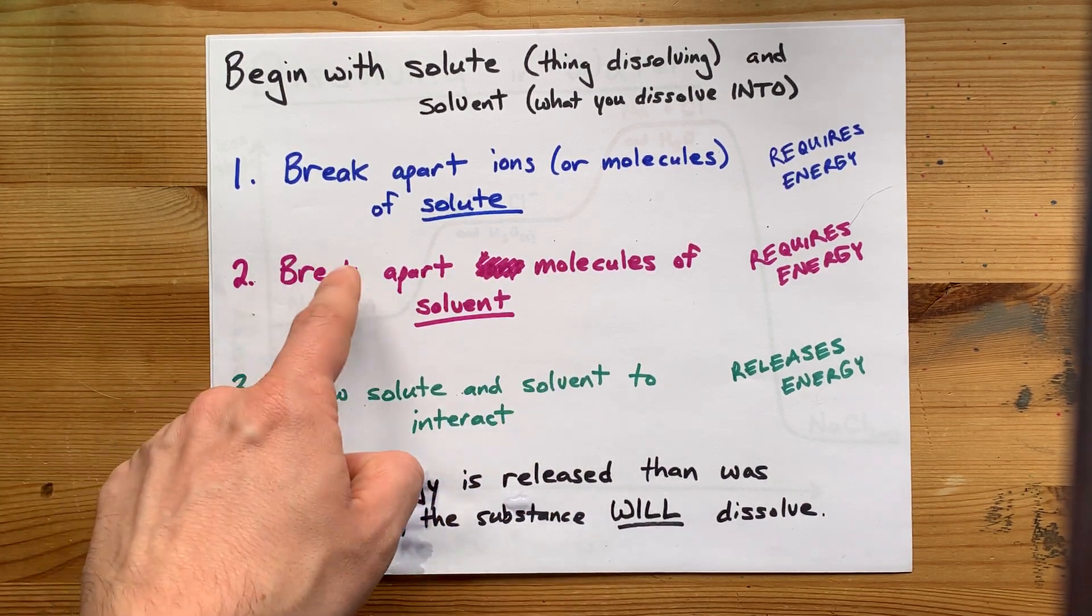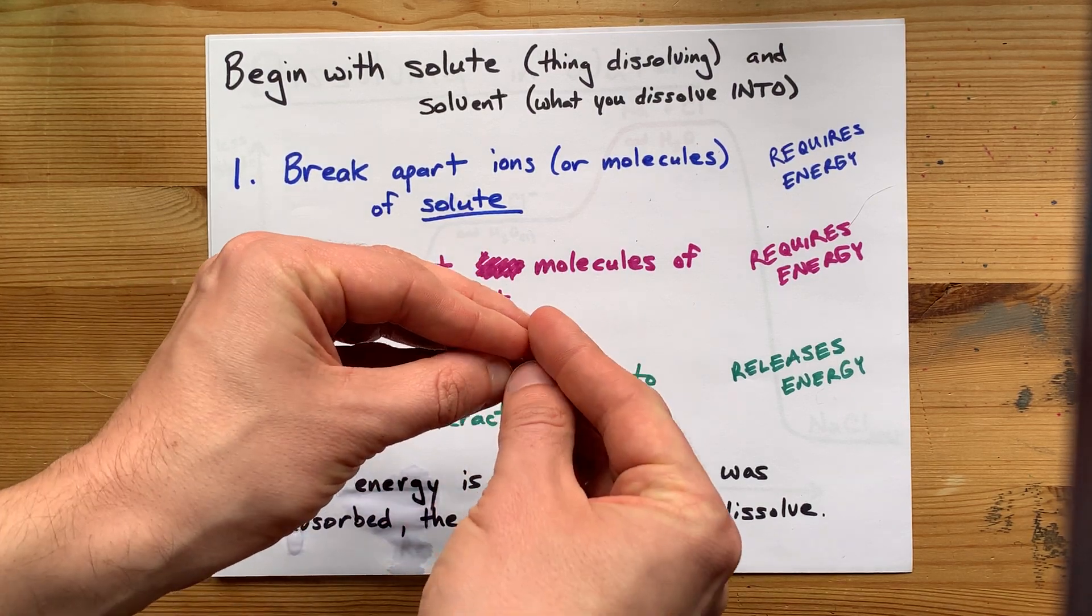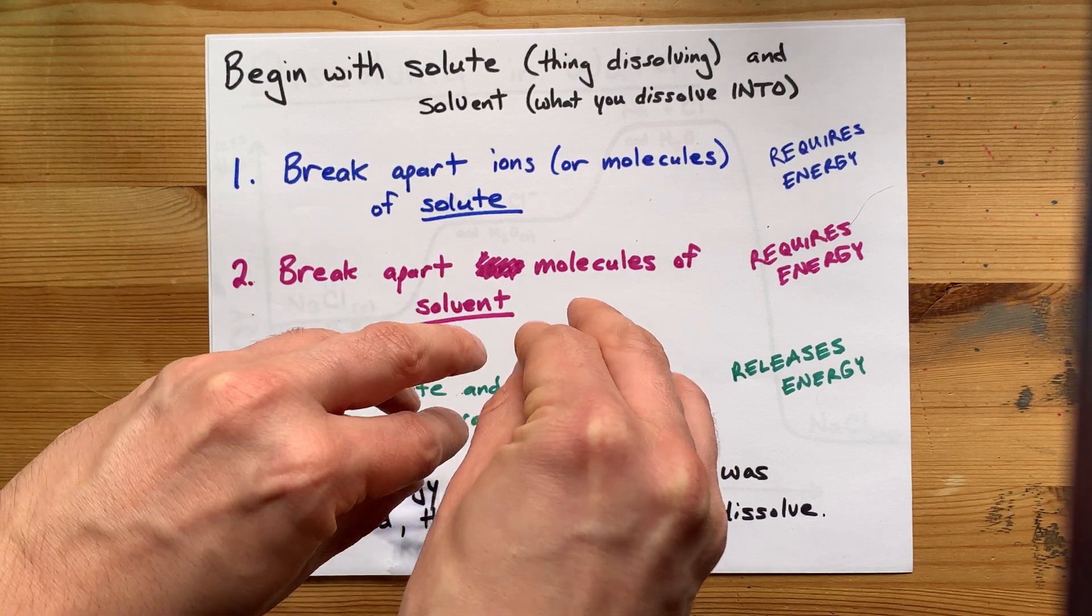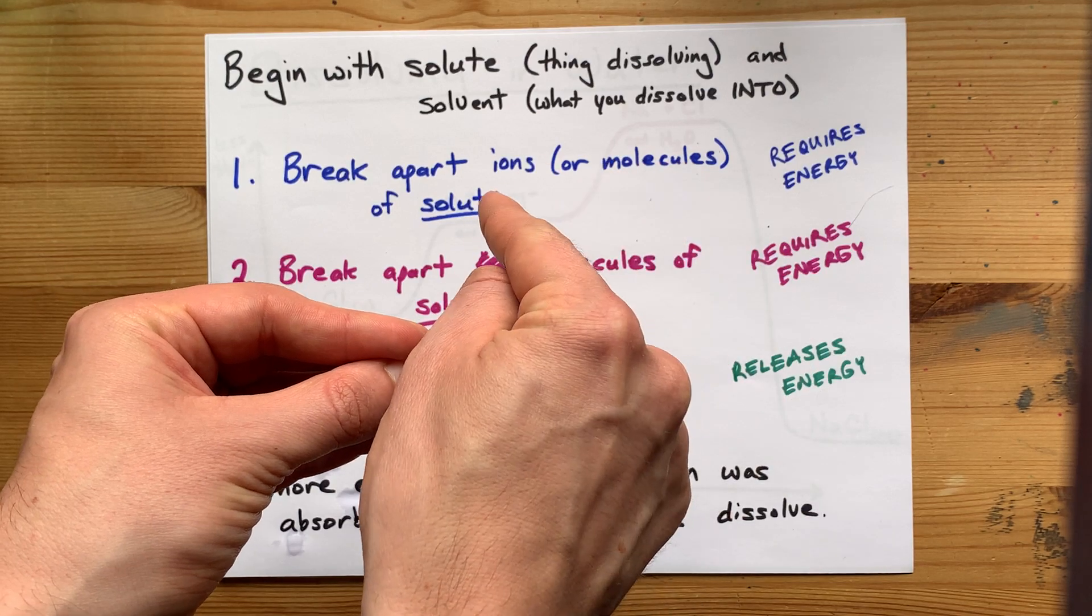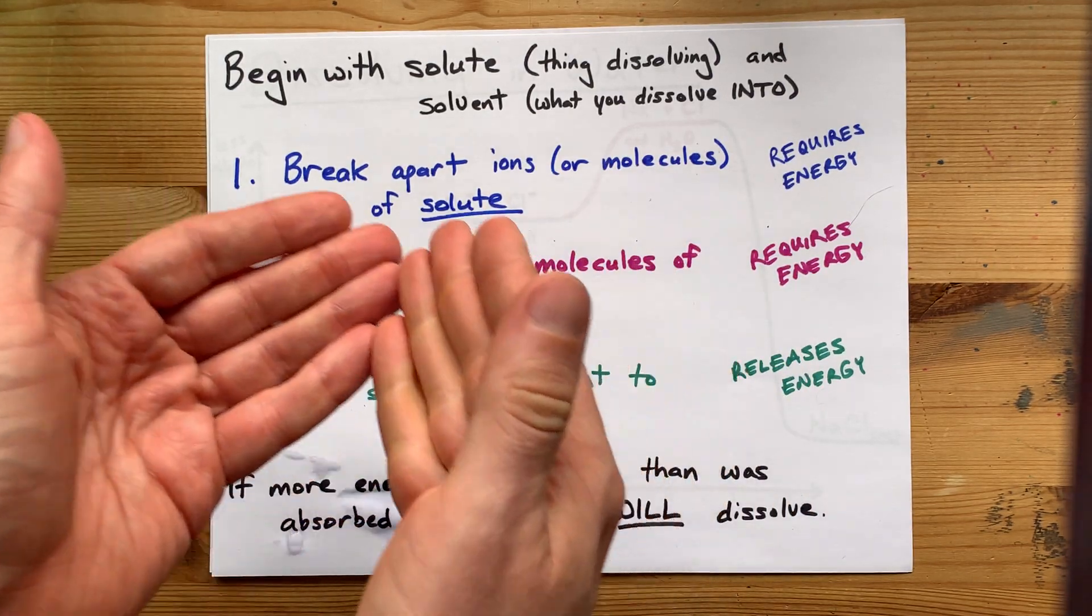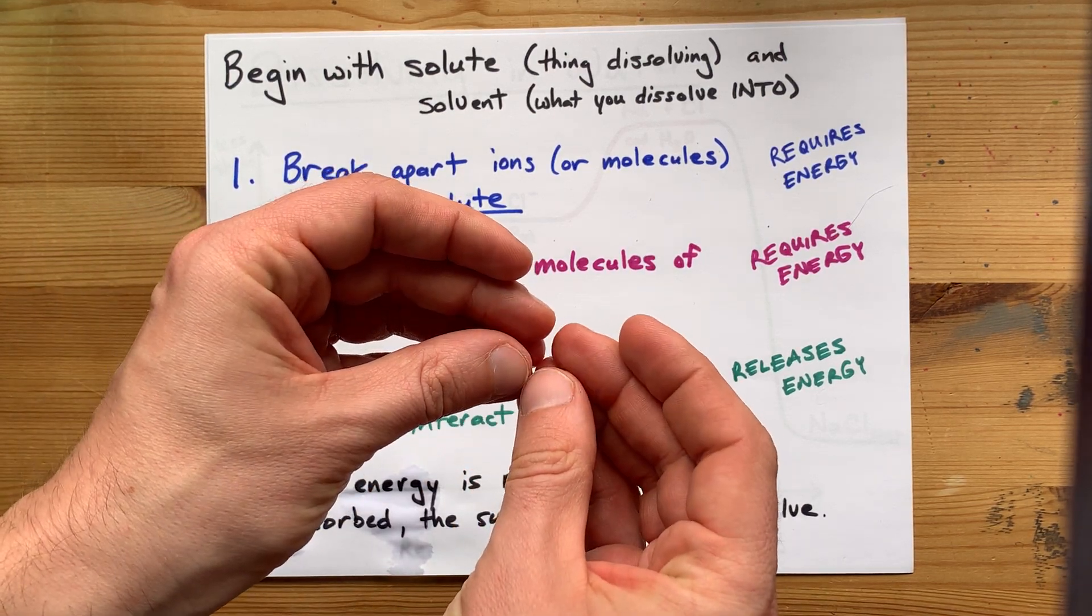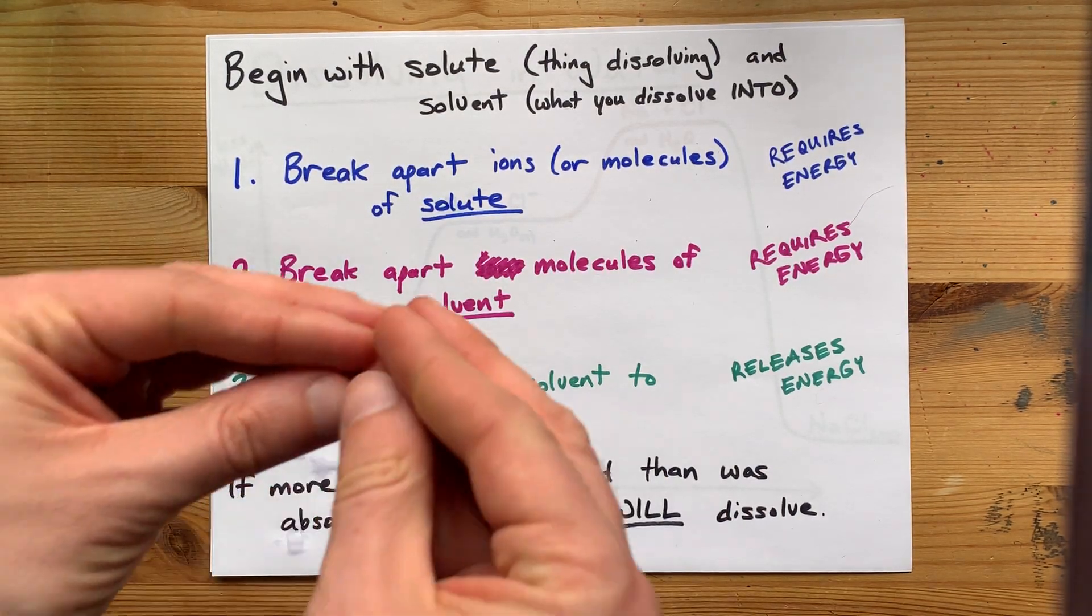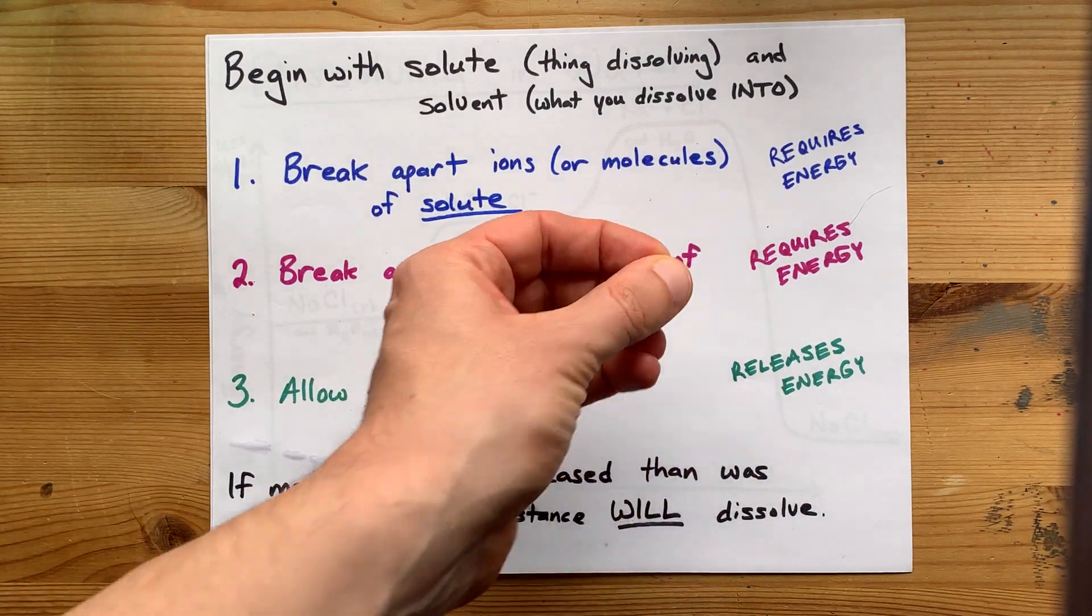That process requires energy. You need to put energy in to separate those molecules or ions from each other. The second thing you need to think about is breaking apart the molecules of solvent. Now, you're not fully breaking these apart. It's more like you're opening up little pockets within them. You're separating them just enough that you can jam a solute particle in there. In order to get a sodium ion to fit inside water, water has to open up just the tiniest bit so the sodium ion can fit in there. Separating those waters from each other also requires energy.